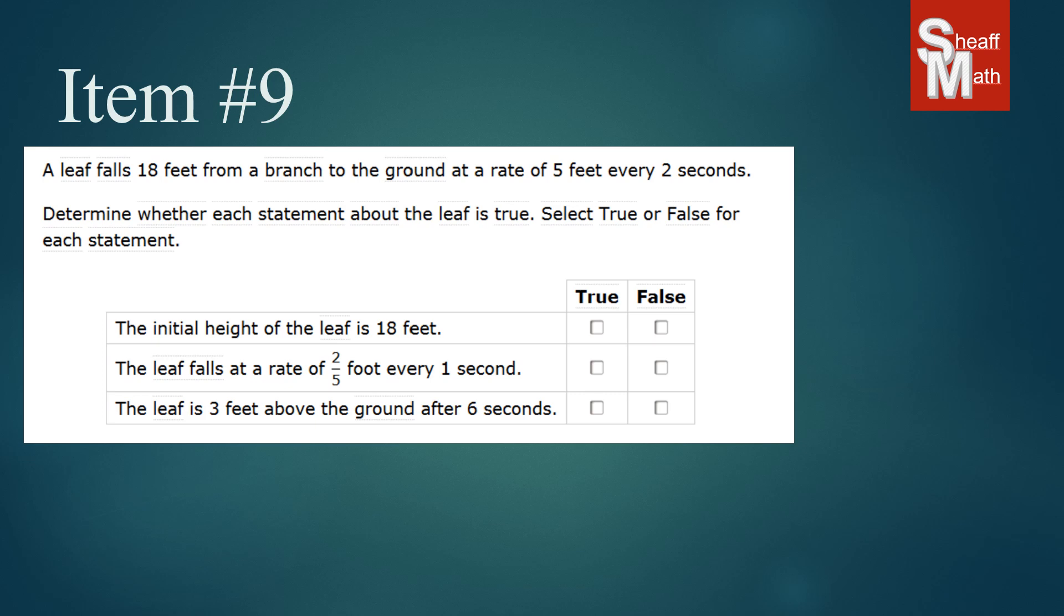A leaf falls 18 feet from a branch to the ground at a rate of 5 feet every two seconds. Determine whether each statement about the leaf is true. Select true or false for each statement.